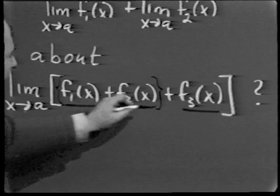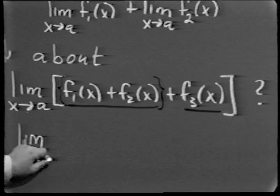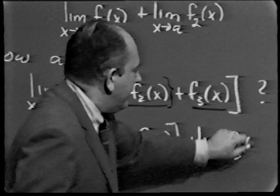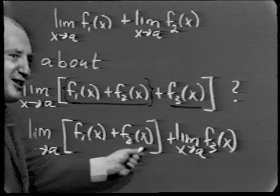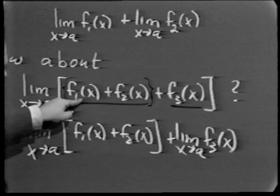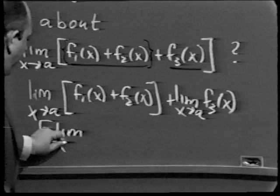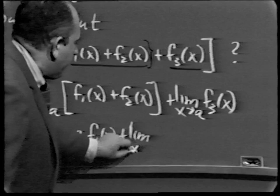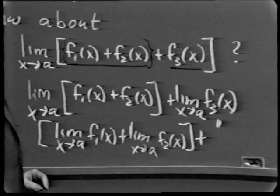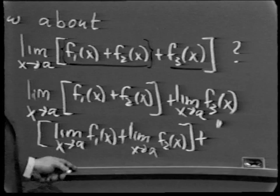We know that the limit of a sum is the sum of the limits when we have two functions. So the limit becomes the limit of f1(x) plus f2(x) plus the limit of f3(x) as x approaches a. Now the first part is itself the limit of a sum of two functions, so we can split it further. The result is that the limit equals the limit of f1(x) plus the limit of f2(x) plus the limit of f3(x) as x approaches a. We've shown the rule holds for the sum of three functions.